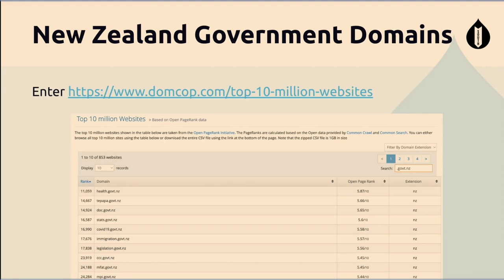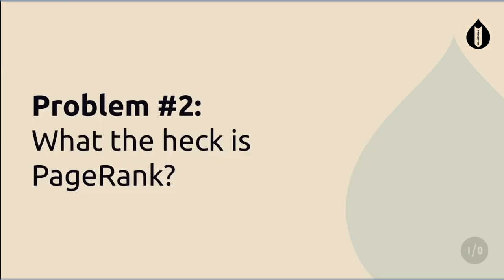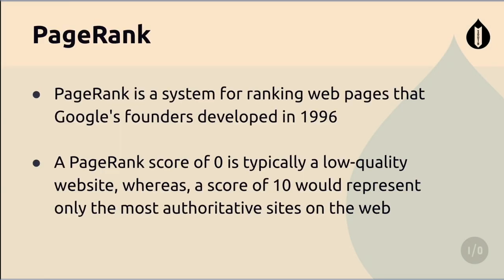We need a way to quantify importance. Toby let me in on a cool little site called Dom Cop — they have a list of 10 million domains on the internet sorted by popularity, which you can download. It has something called page rank attached. For those who've been in the web since around 1986, you'd remember the page rank toolbar you could add to your browser — it told you a score, and it was really important because that's what Google used to determine search result placement.